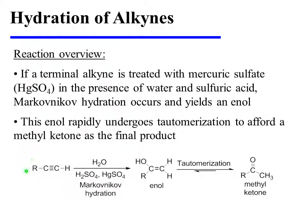If a terminal alkyne is treated with mercuric sulfate in the presence of water and sulfuric acid, Markovnikov hydration occurs. This yields an enol in which the alkyne carbon that possessed more hydrogens to begin with acquires the new hydrogen during the course of the hydration. This enol then rapidly undergoes a process known as tautomerization to afford a methyl ketone as the final reaction product.